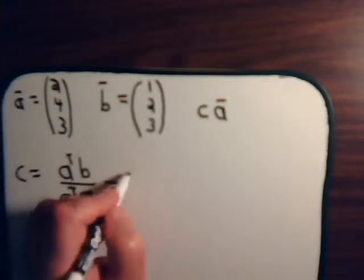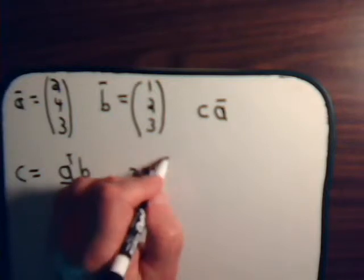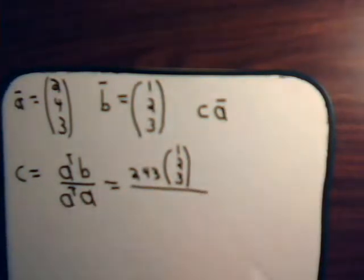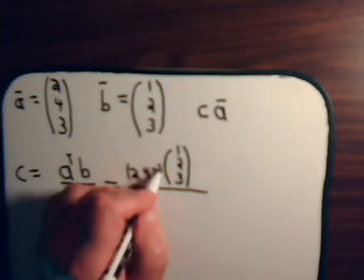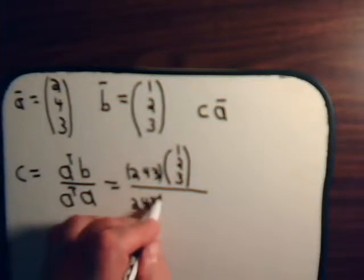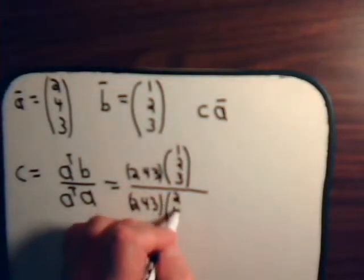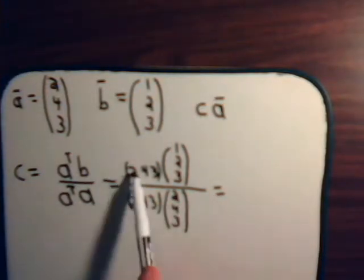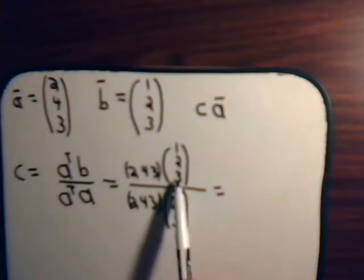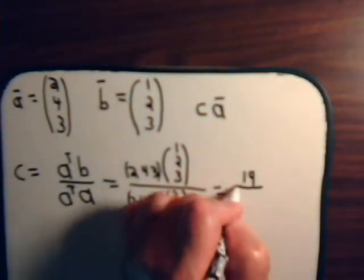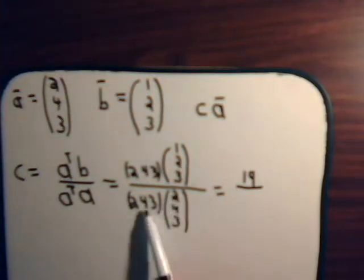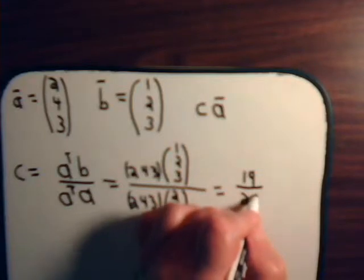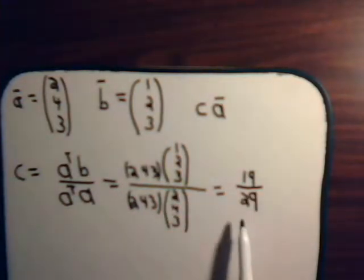We have A transpose, that's (2, 4, 3), times B. Those are its components, divided by A transpose times vector A. So, this is equal to 2 plus 8 plus 9, that's 19. Then here we have 4 plus 16 plus 9, that would be 29. So, that is what C is.